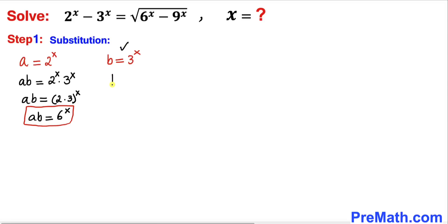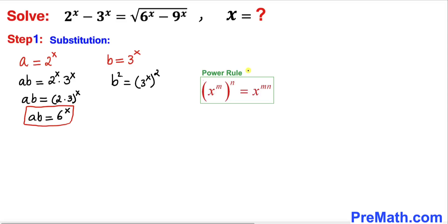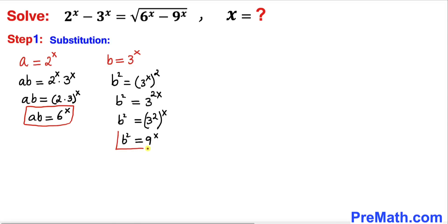Now let's focus on b equals 3^x. Let's square both sides: b squared equals (3^x)^2. Applying the power rule, (3^x)^2 equals 3^(2x), which equals (3^2)^x. Since 3 squared is 9, b squared turns out to be 9^x.